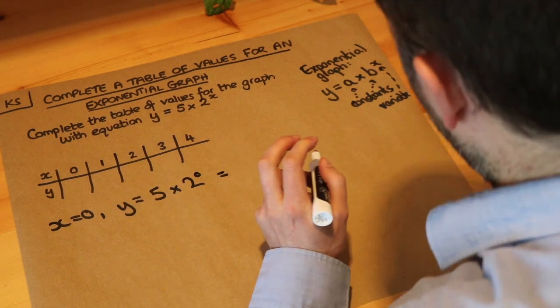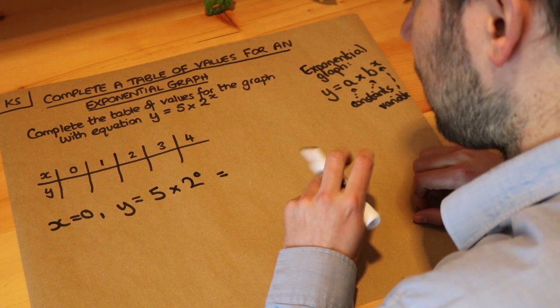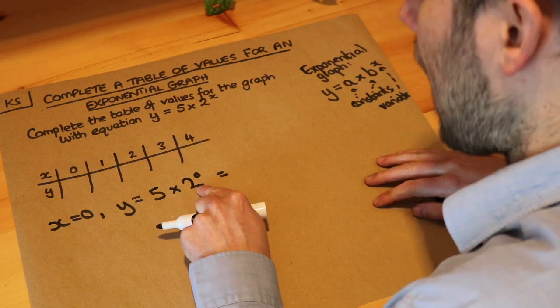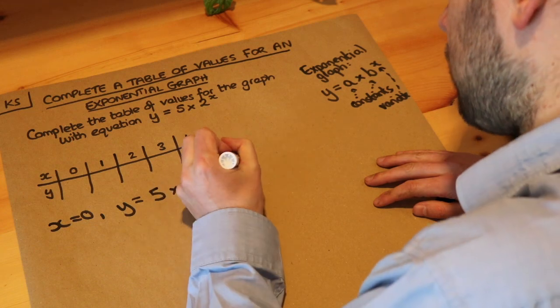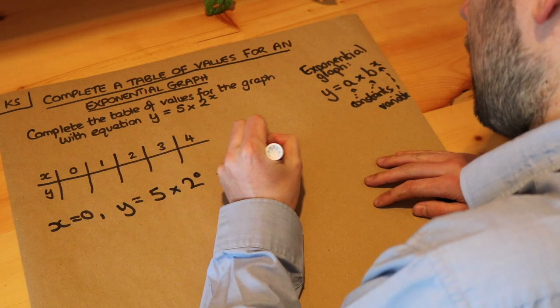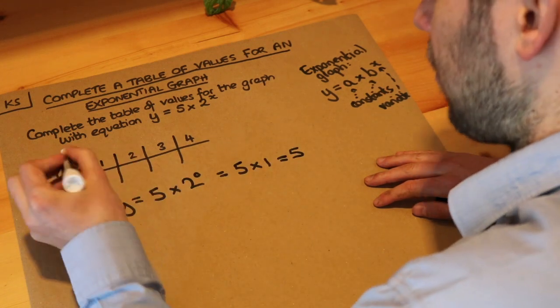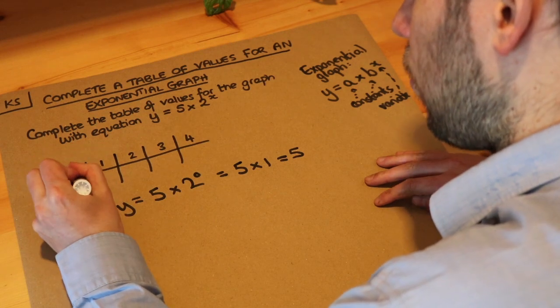We could use a calculator if we wanted, but let's try and do it in our heads. Well, two to the power of zero, anything to the power of zero you might remember is just one. So we get five times one and that is equal to five. So when x is zero, y is five.